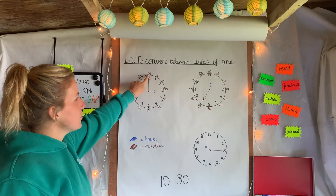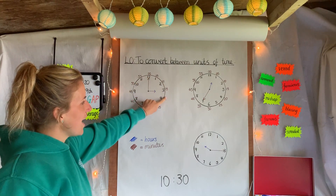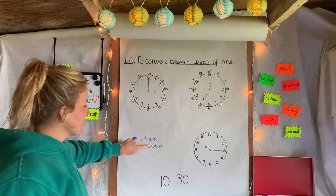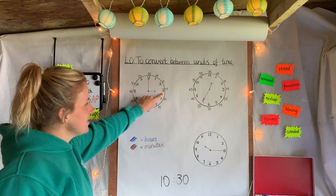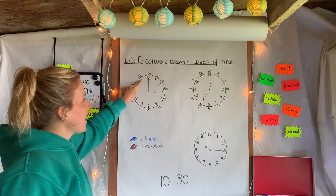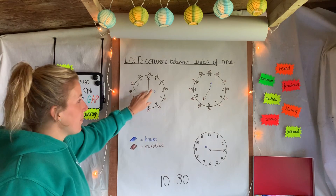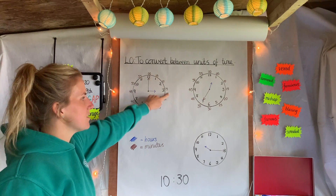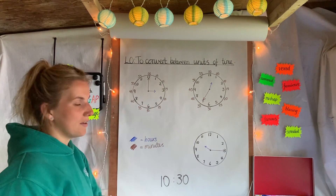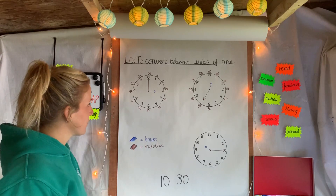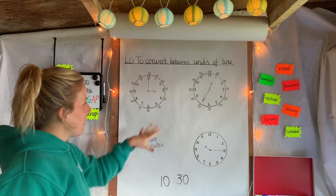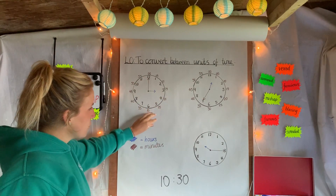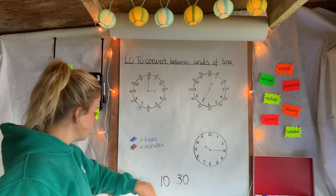Those colors relate to the numbers around the outside of the face of the clock. Around the outside we've got the minutes in brown, and on the inside we've got the hours. On a real clock you wouldn't see the minute labels — you're just expected to know them.